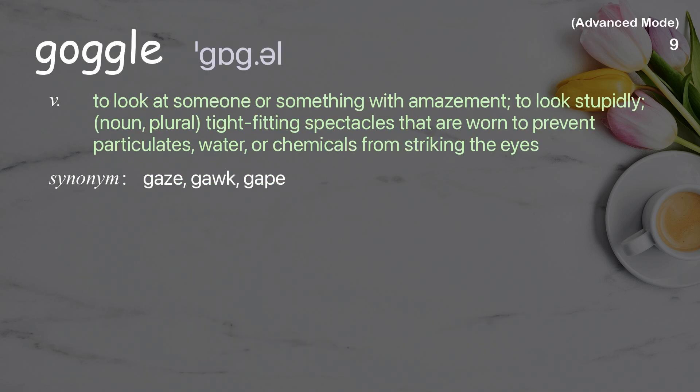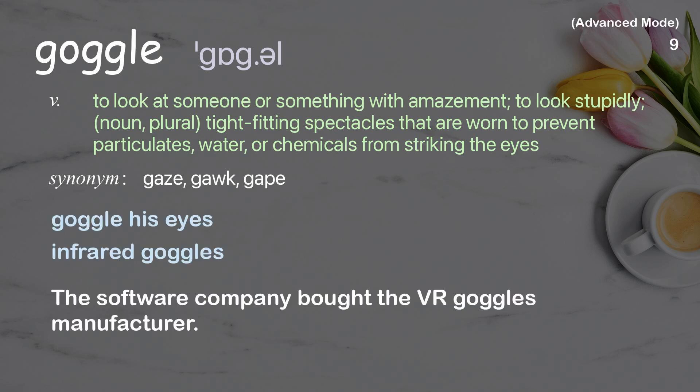Goggle: to look at someone or something with amazement; to look stupidly. As a noun (plural): tight-fitting spectacles that are worn to prevent particulates, water, or chemicals from striking the eyes. Examples: goggle his eyes, infrared goggles. The software company bought the VR goggles manufacturer.